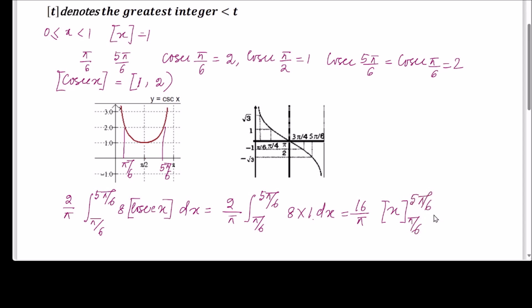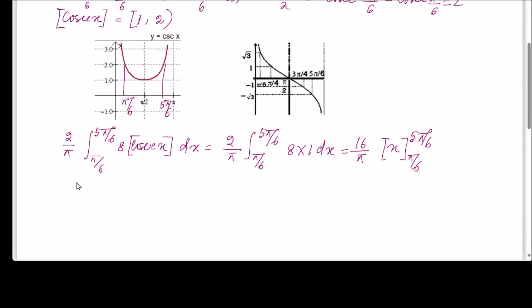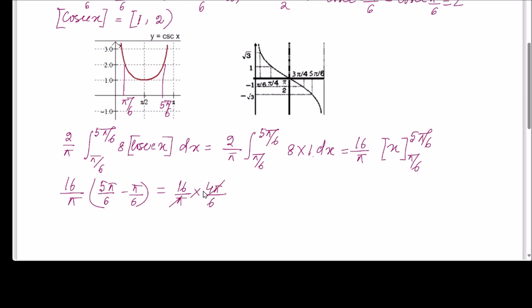The calculation is simple: (16/π) × (5π/6 − π/6) = (16/π) × (4π/6). The π cancels, giving 16 × 4/6 = 64/6 = 32/3. So the first result is 32/3.